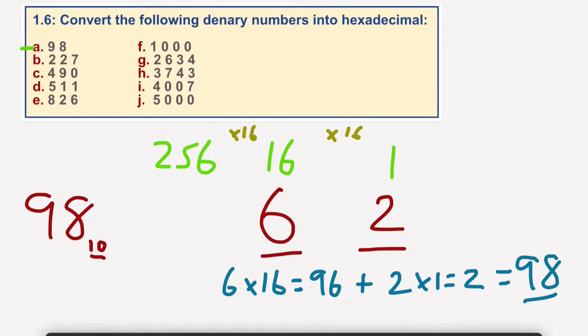Okay, we could always convert this into binary and then split it into nibbles, which would be an easy option as well. But this is the way of doing it straight from decimal into hexadecimal.